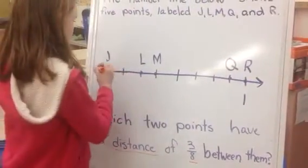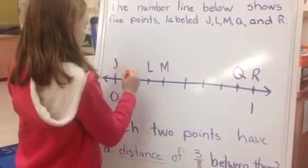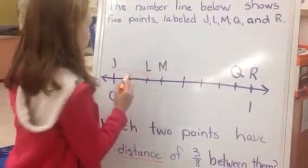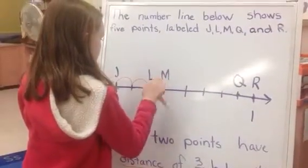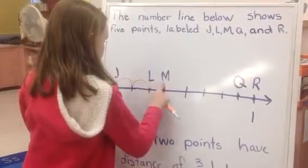If you do J and L, that's one, two. That's not three jumps. And if you do L and M, that's only one.